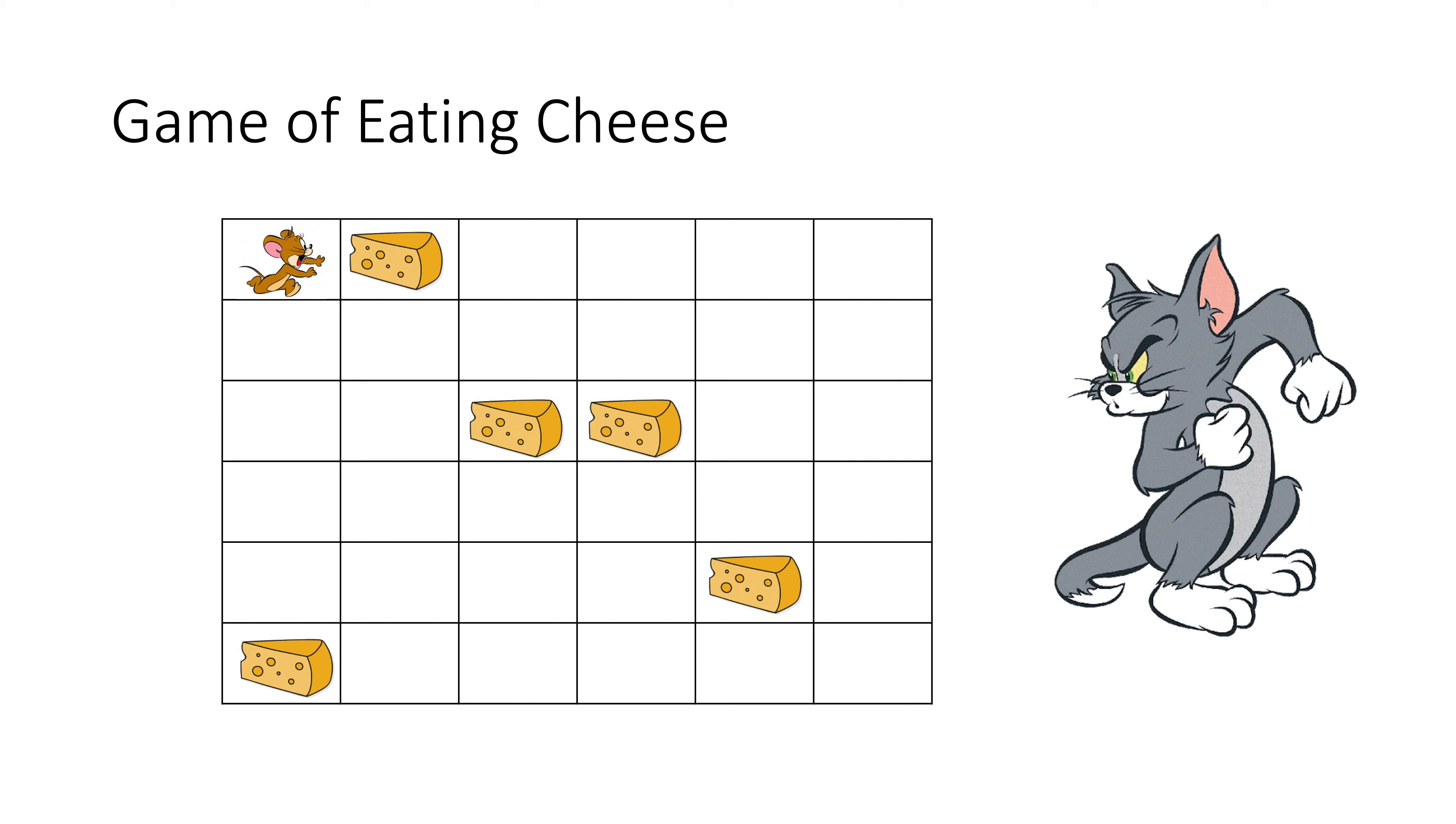The game setup is very simple. There are some random pieces of cheese in a 2D grid. Jerry has 200 seconds to find and eat as many pieces as possible because Tom will be back home in 200 seconds. Very simple rule and boring game, right?